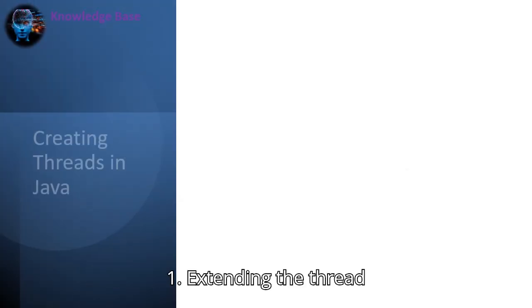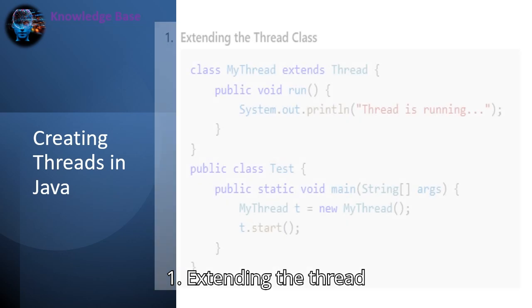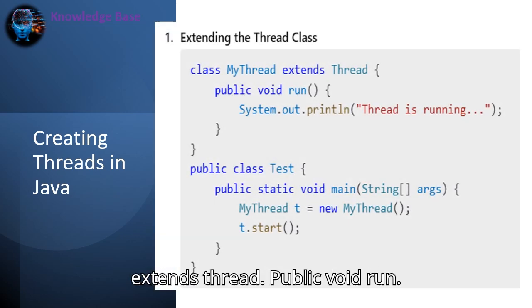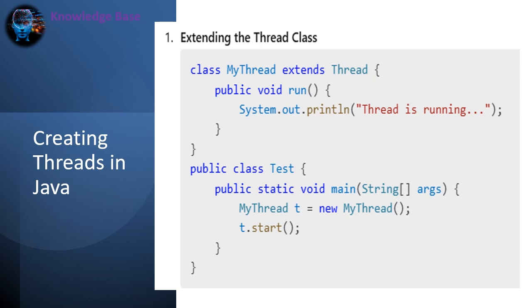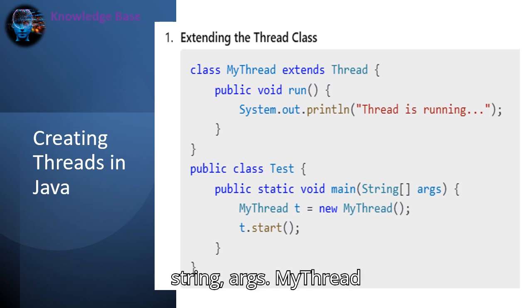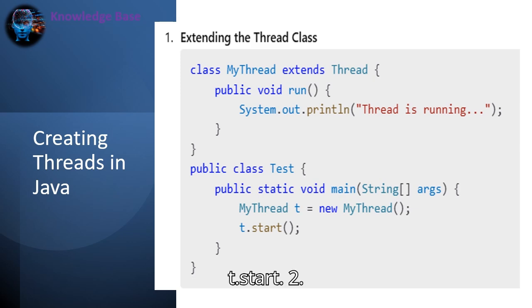Java provides two ways to create threads. 1. Extending the Thread class: class MyThread extends Thread { public void run() { System.out.println("Thread is running"); } } public class Test { public static void main(String[] args) { MyThread t = new MyThread(); t.start(); } }